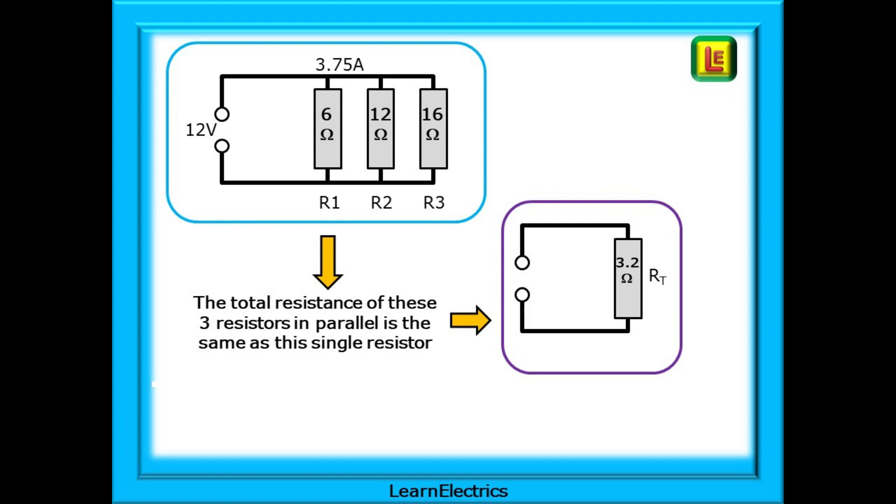Notice that the answer is always smaller than the smallest resistor. 3.2 ohms is smaller than 6 ohms. This will always be the case, and it is a good check on your calculations.